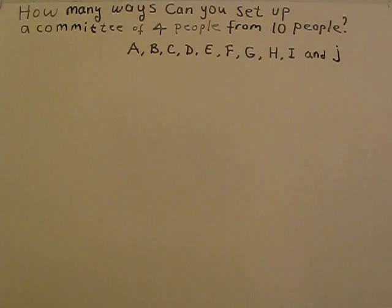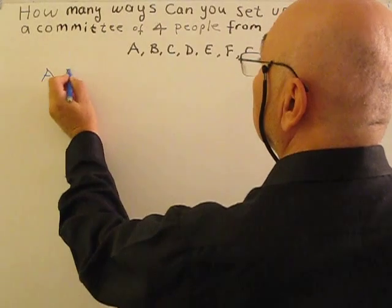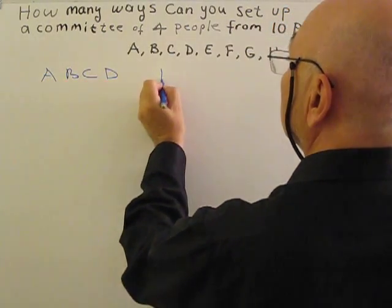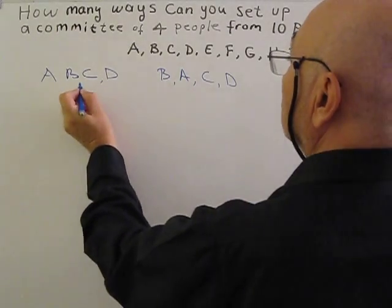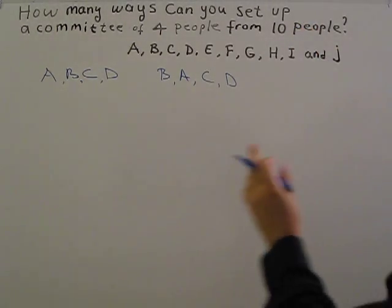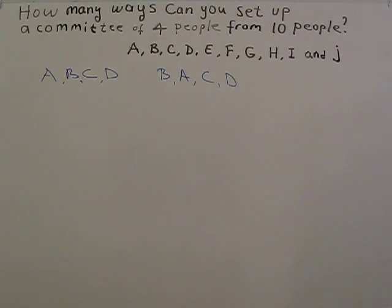Because order is not important. Basically, committee A, B, C, D and B, A, C, D. So committee of people, members A, B, C, D or members B, A, C, D will be the same. So that is why order is not important. This is a combination problem.